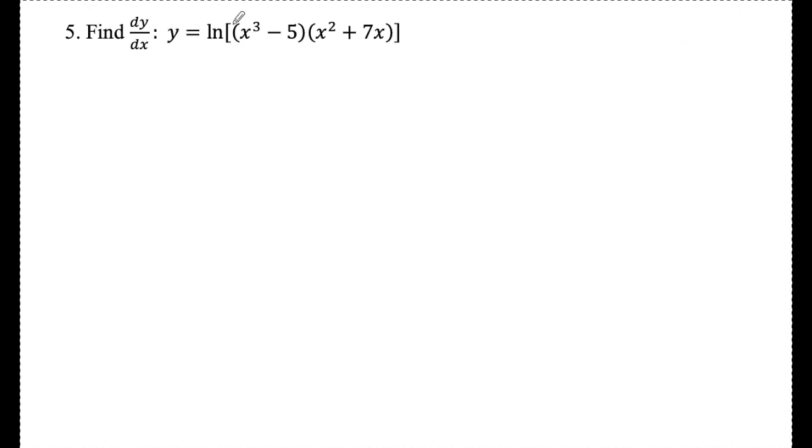Number five: y = ln[(x³ - 5)(x² + 7x)]. I have a couple options. I could let this entire product be u and use 1/u times u', which would require the product rule and be messy. Or I could multiply this out first. However,